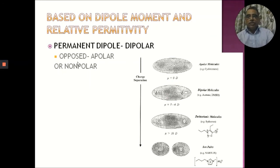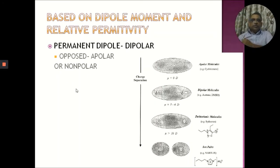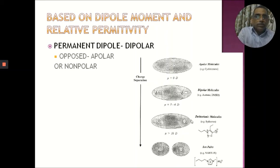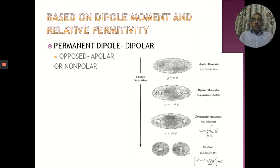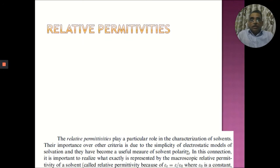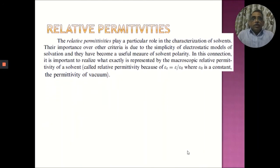If a molecule has a permanent dipole, there is dipole-dipole interaction. For apolar molecules, the dipole moment is essentially 0 Debye. Dipolar molecules have mu values in the range of 3 to 6 Debye. If the mu values are higher, they are called zwitterionic — at even higher values, ions can separate and form ion pairs. This is what you see in the permanent dipole present in a molecule.